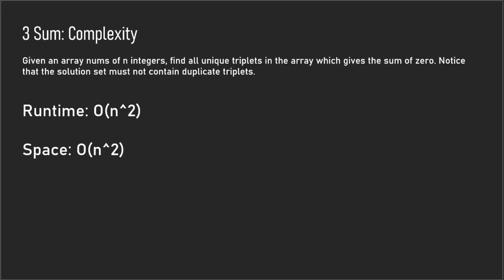The runtime complexity is O(n²) because we have a nested while loop inside a for loop. The space complexity is also O(n²) because we can have that many solutions — for example, if every element in the array is zero, everything is a solution, giving us O(n²) solutions. That's pretty much it. If this video helped you out, leave a like and consider subscribing. Thanks for watching!